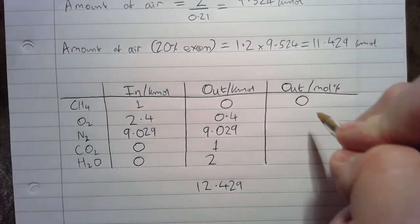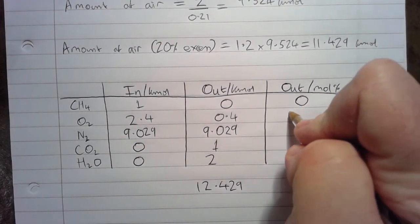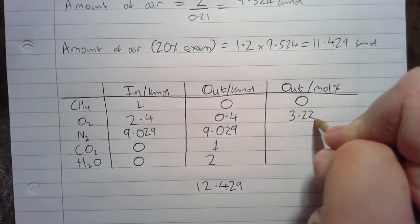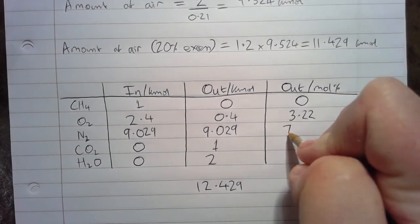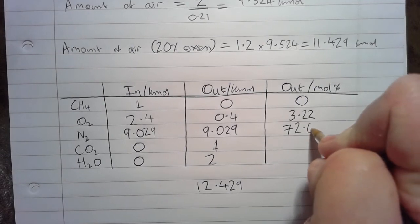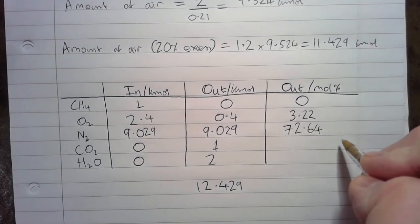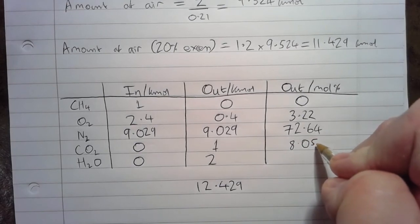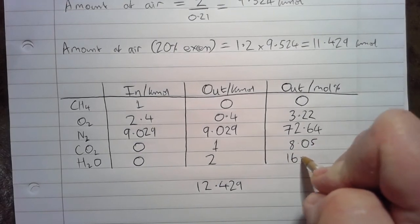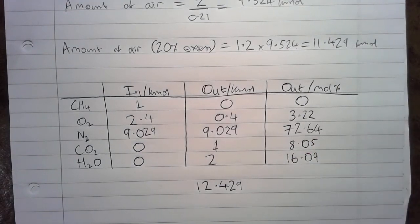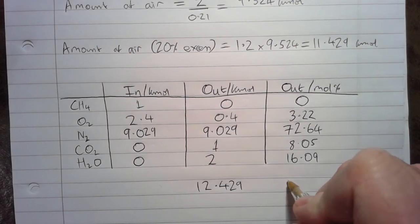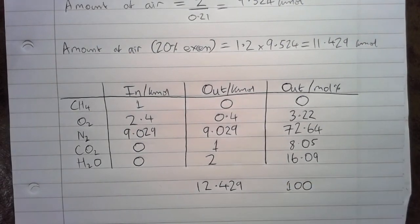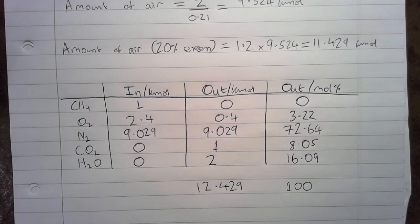So, the methane is 0, the oxygen works out to be 3.22, nitrogen is 72.64, the CO2 is 8.05, and the water is 16.09. And that all adds up to 100. So, overall, that is how we can solve the material balance for the complete combustion of methane.